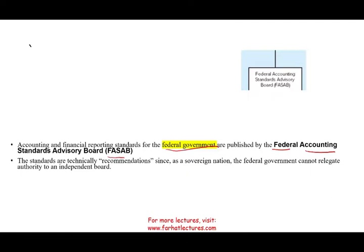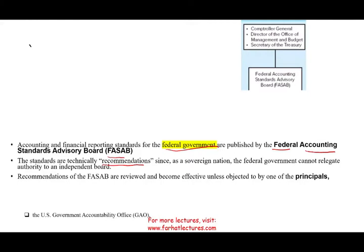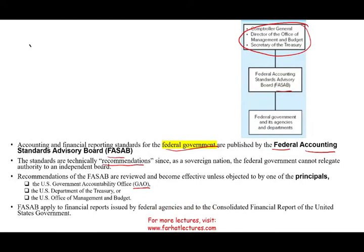The standards are technically recommendations, because the U.S. is obviously a sovereign nation and it cannot give that regulatory authority to an independent party. Those recommendations become standards or principles as long as no one objects to them. Three parties must not object: the U.S. Government Accountability Office, the U.S. Department of Treasury, and the U.S. Office of Management and Budget, as well as the Comptroller General. When these parties don't object to what FASAB states, it becomes effective.